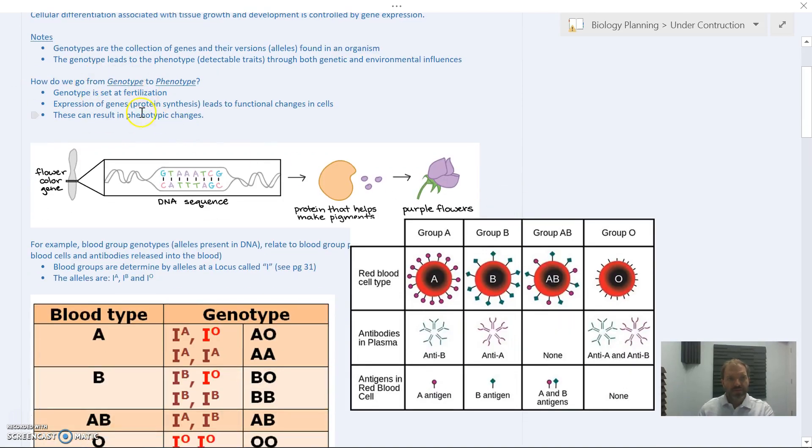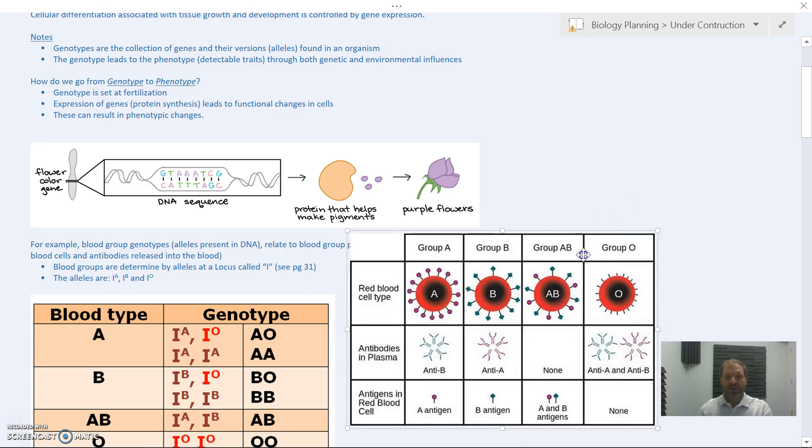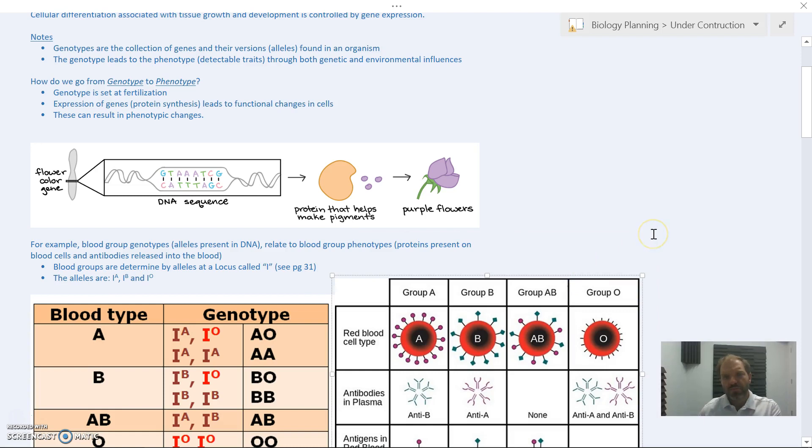We need to first understand genotype and phenotype. The genotype is the genetic side of this equation and looks at the genes and versions of the genes, alleles, that are expressed or available within that organism. The phenotype is the traits, the physical outcomes that we can see from that.